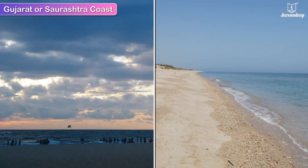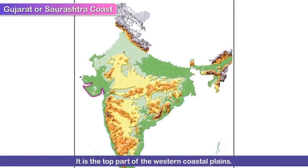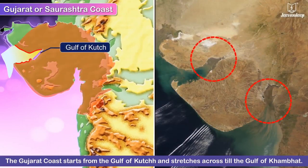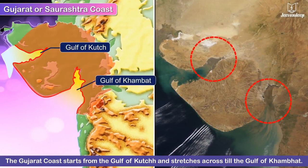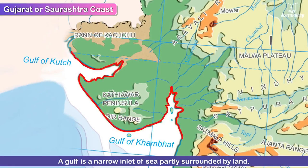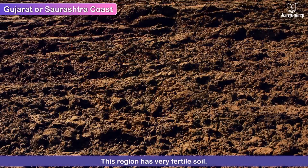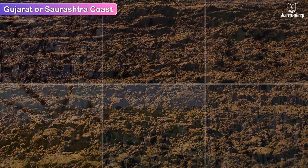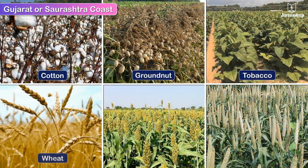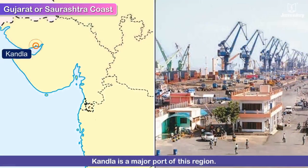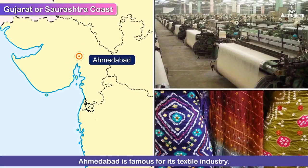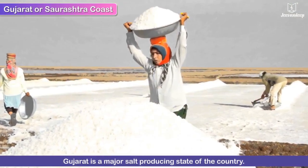The Gujarat or Saurashtra coast is the top part of the western coastal plains. It starts from the Gulf of Kutch and stretches across till the Gulf of Khambhat. A gulf is a narrow inlet of sea partly surrounded by land. This region has very fertile soil, and thus crops like cotton, groundnut, tobacco, wheat, jowar and bajra grow well here. Kandla is a major port of this region. Ahmedabad is famous for its textile industry, and Gujarat is a major salt-producing state of the country.